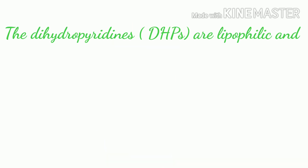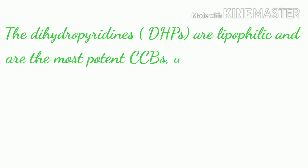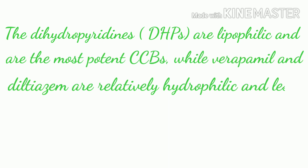The dihydropyridines (DHPs) are lipophilic and are the most potent CCBs, while verapamil and diltiazem are relatively hydrophilic and less potent.